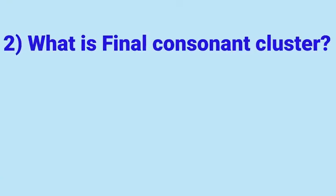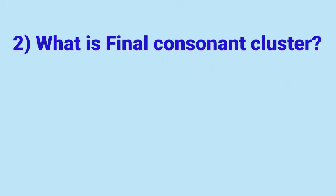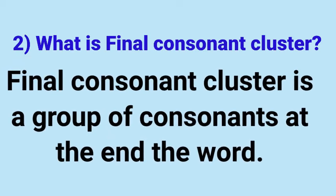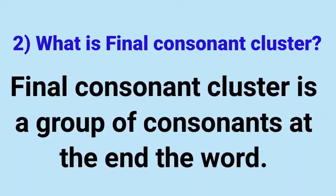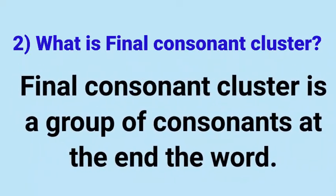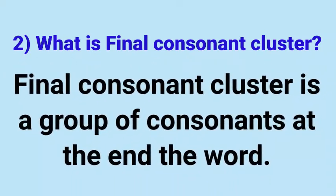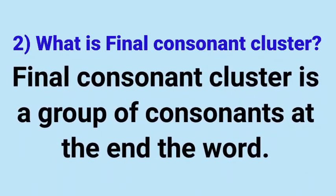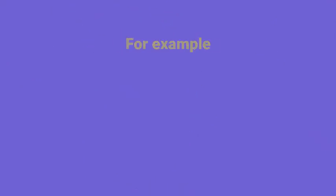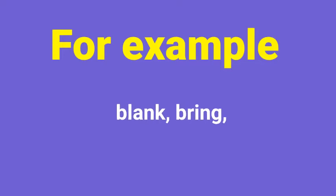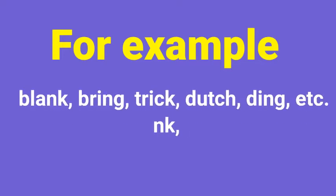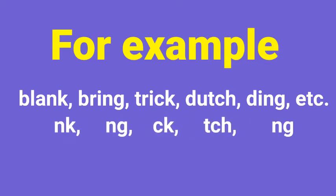اب ہم final consonant cluster کی جانب آئیں گے۔ What is final consonant cluster? Final consonant cluster is a group of consonants at the end of the word — یہ لفظ کے آخر میں استعمال ہوتے ہیں۔ For example: blank, bring, trick, dutch, ding. Blank میں 'nk'، bring میں 'ng'، trick میں 'ck'، dutch میں 'tch' اور ding میں 'ng' final consonant cluster کو ظاہر کرتے ہیں۔